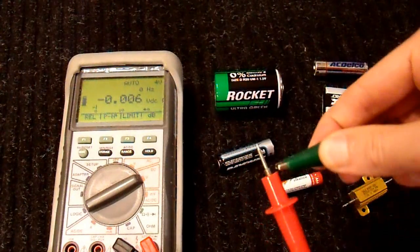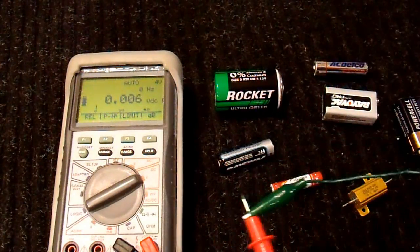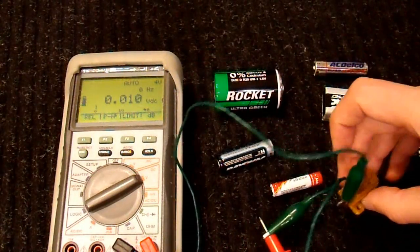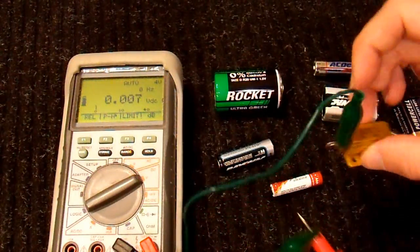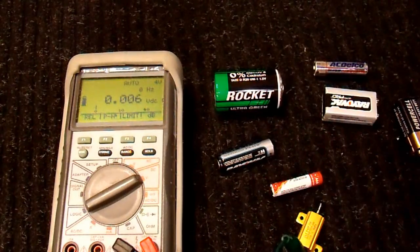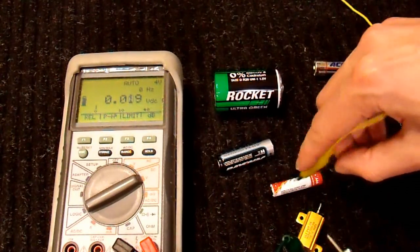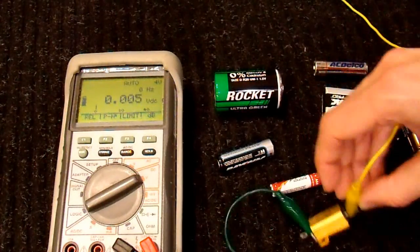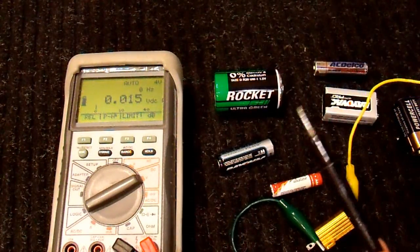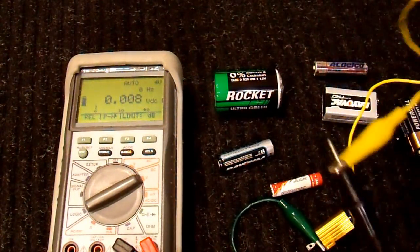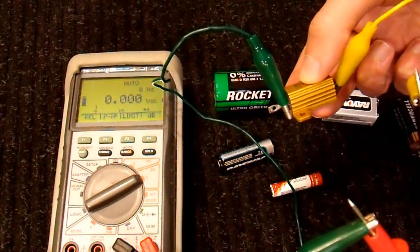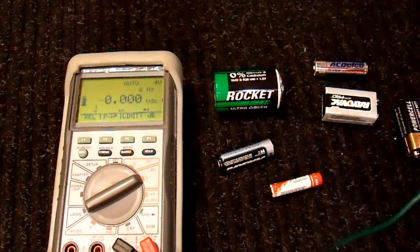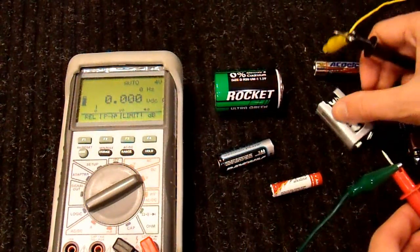So you take your multimeter leads, put an alligator clip on it up to this end of the resistor. So now I have this connected to that side of the resistor. And I'll take another alligator clip connected to the other side of my resistor and connect it to my other probe. Now I have these probes connected through this resistor.